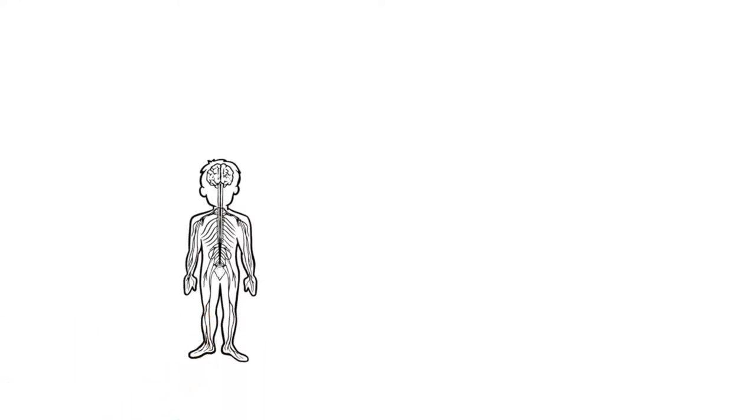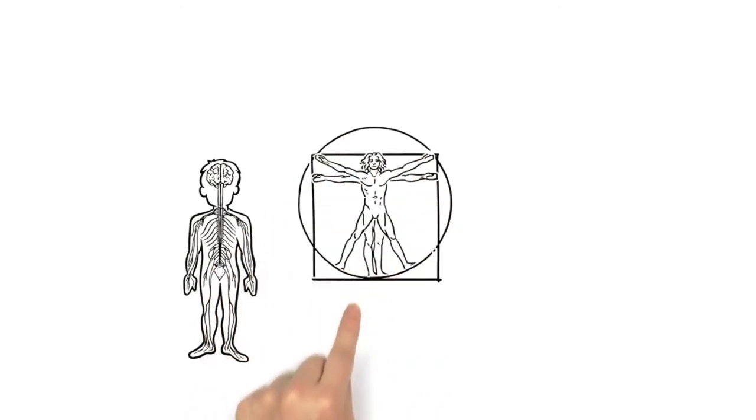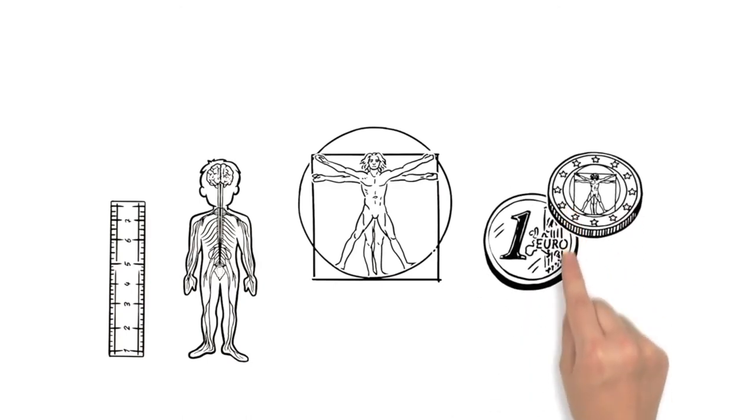Anatomy is also the focus of the Vitruvian man. A human being standing in the center of a circle and a square. Leonardo's groundbreaking drawing depicts the ideal human body measurements and proportions. Today, the drawing is featured on Italy's one euro coin.